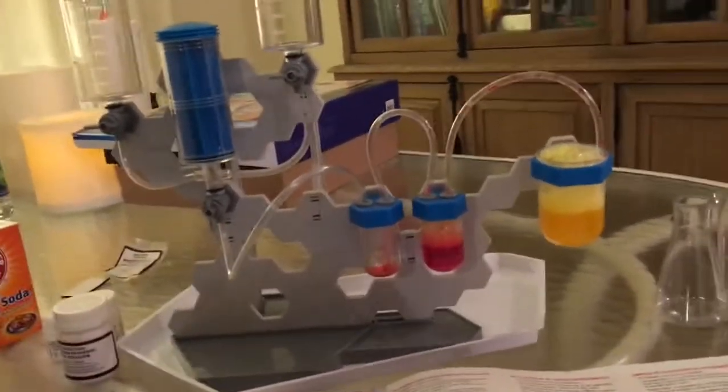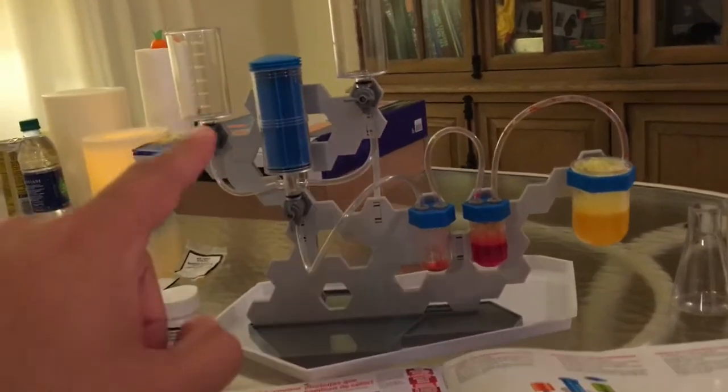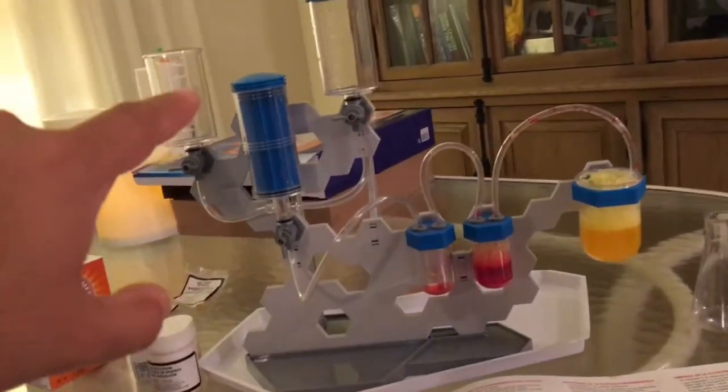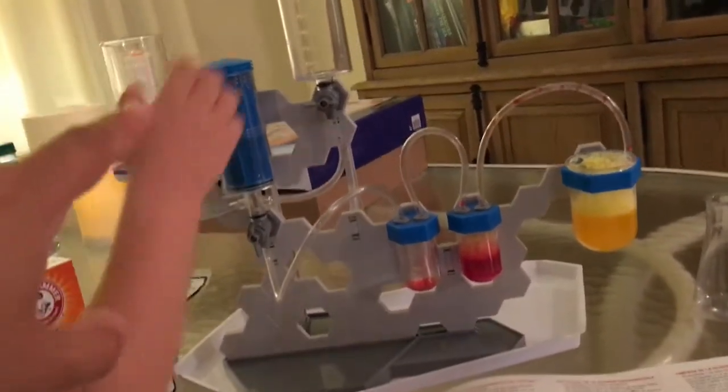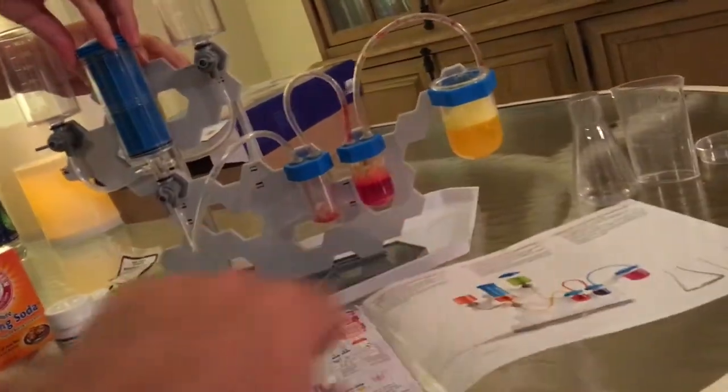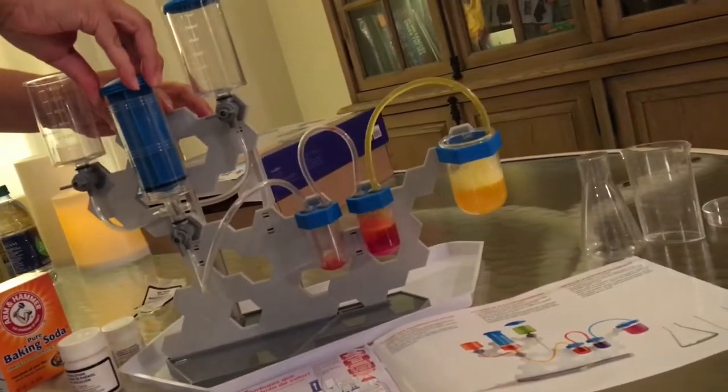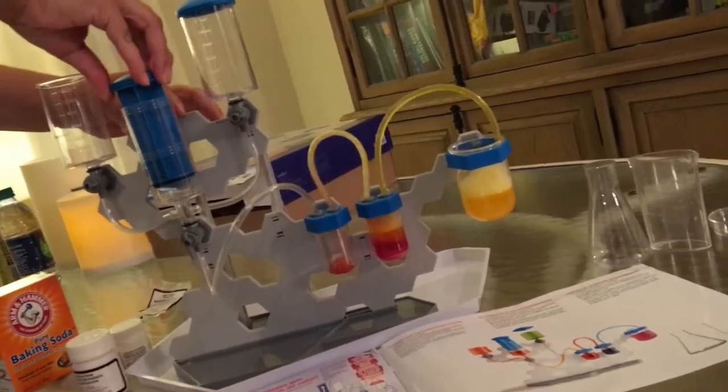So we just reverse the airflow - we pulled the plunger up, we pushed it down, and you'll notice that now the color of the lime water has just changed to yellow and it's bubbling up.